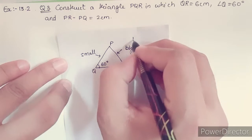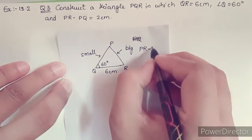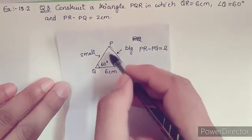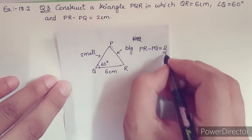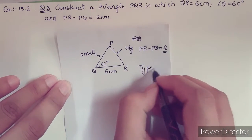Then only it is possible to get PR minus PQ equals 2 cm. PR must be bigger than PQ, then only we are going to get 2 cm. This is type 3 type of question.